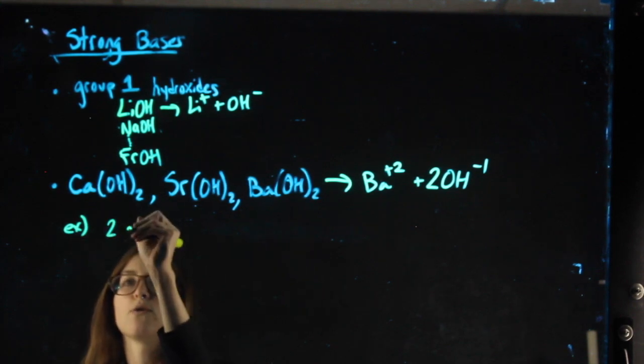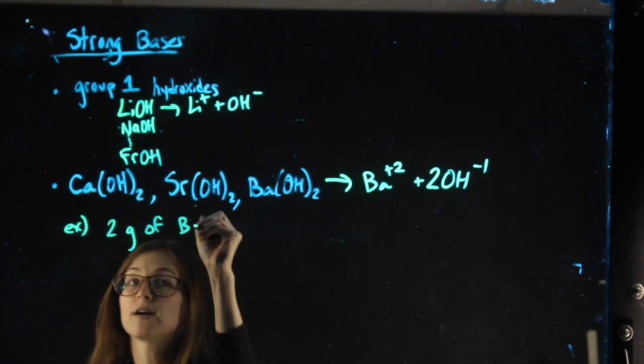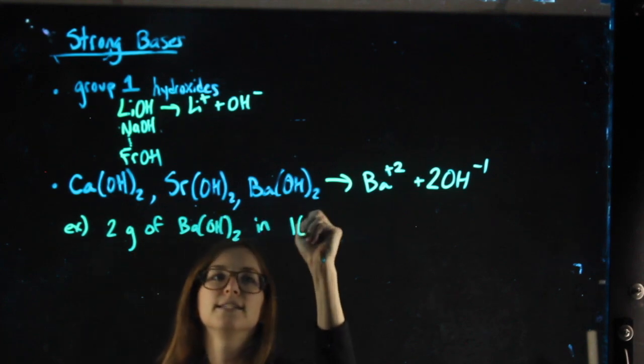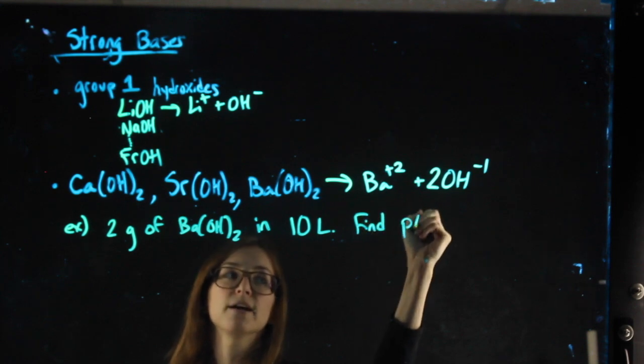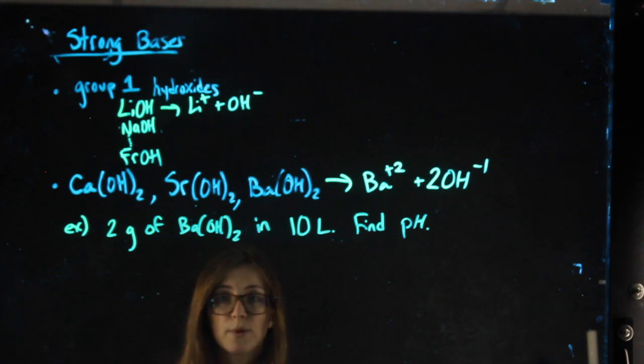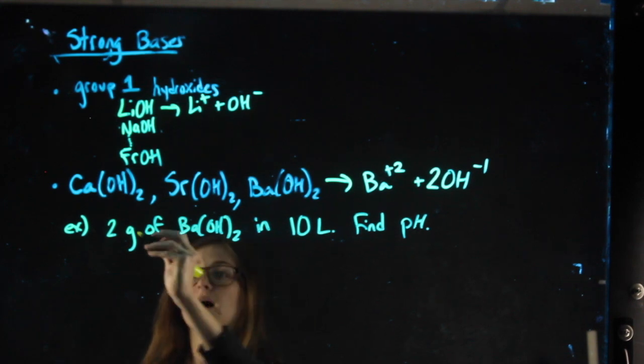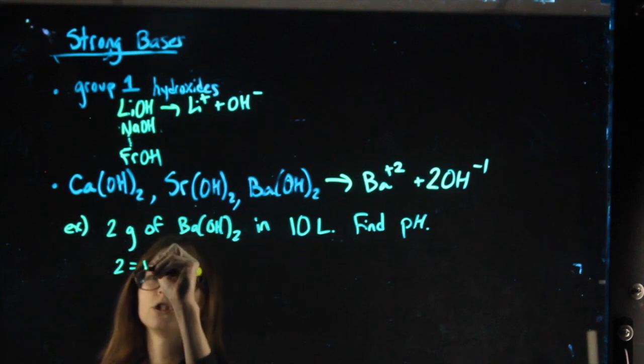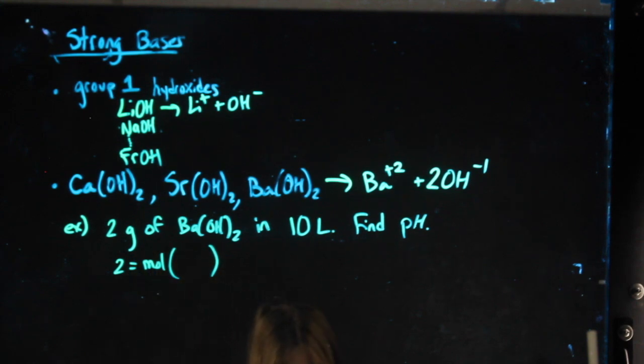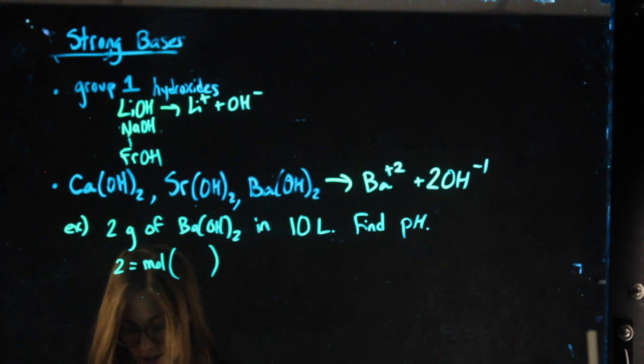So, for example, let's say I had two grams of barium hydroxide in 10 liters, and I want you to find the pH. Similar steps as what we did before, same problem-solving process, but make sure you're labeling everything really well. So, from grams to moles, two equals moles times molecular weight of barium hydroxide. So barium is 137 plus the two oxygens plus the two hydrogens. We get a molecular weight of 171.